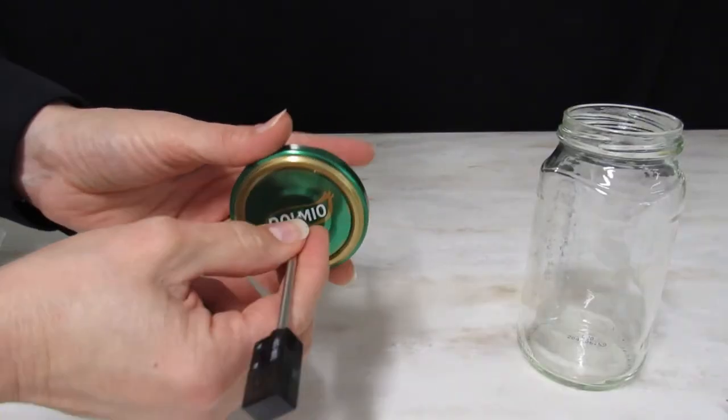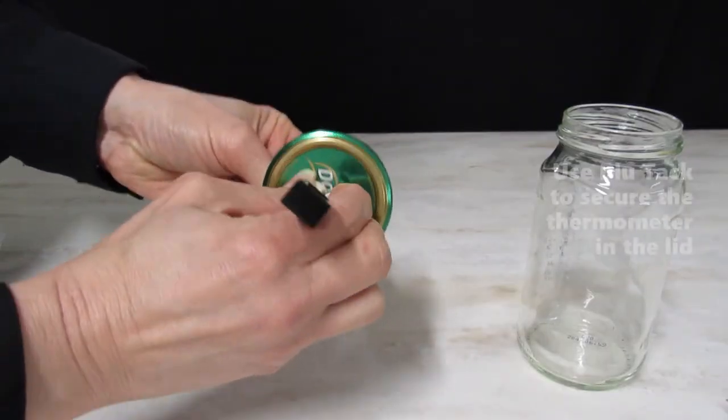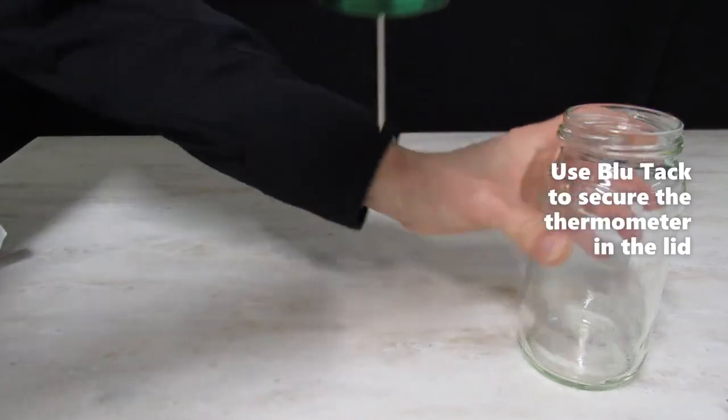Place the thermometer through the holes and secure it with blue tack so it is suspended in the middle of the jar. Repeat with the second jar.